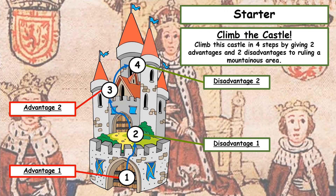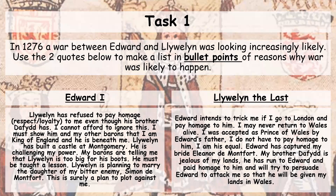You should all be back from doing that task now, so we're going to move on. In 1276, a war between Edward and Llewellyn is looking extremely likely. Below are two quotes from each of them, and I'd like you to use these quotes to make a list of bullet points of reasons why you think war is about to happen between them both.